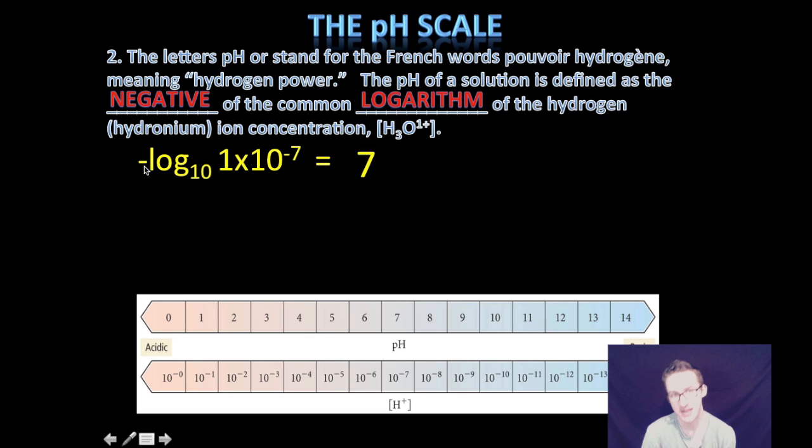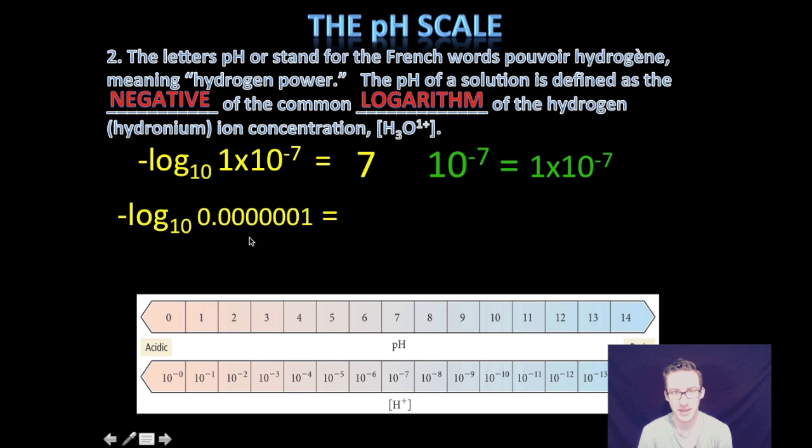Because remember, we're taking the negative log of this number. Again, the question is, what number, what power do I have to raise 10 to to get one times 10 to the negative seven? And I have to raise it to negative seven. But because we're taking the negative log, it is seven. It might be easier to look at this in standard notation, but it's the same thing. Taking the log of 0.0000001, which is one times 10 to the negative seven, what exponent do I have to raise 10 to to get this number? Again, that answer is seven. Well, it's really negative seven, but I'm taking the negative log. So 10 to the negative seven equals 0.0000001.